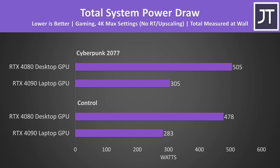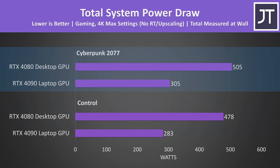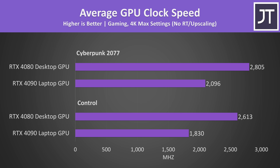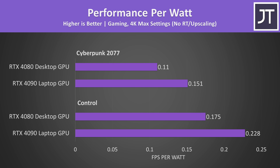The desktop card was using significantly more power than the laptop in two different games. Control at 4K max settings was drawing 69% more power on the desktop, while Cyberpunk 2077 at 4K ultra settings was using 66% more power. Despite using more power, the desktop card was running cooler, though the laptop wasn't really that much warmer. More power allows the desktop to reach higher clock speeds, but the laptop GPU actually wins in terms of power efficiency — producing more frames per watt relative to its power consumption.